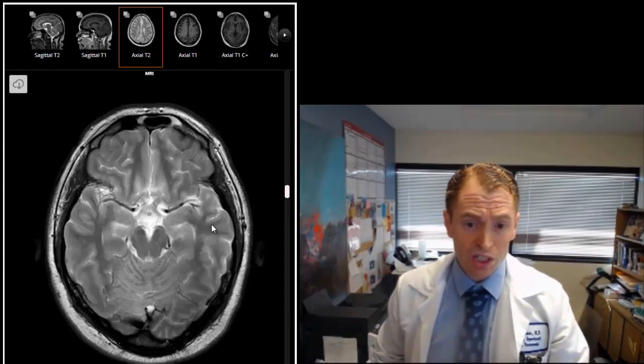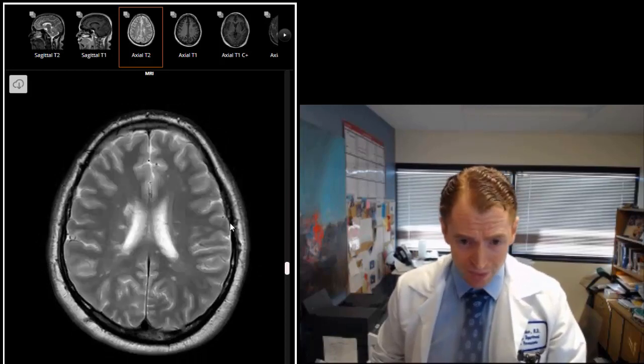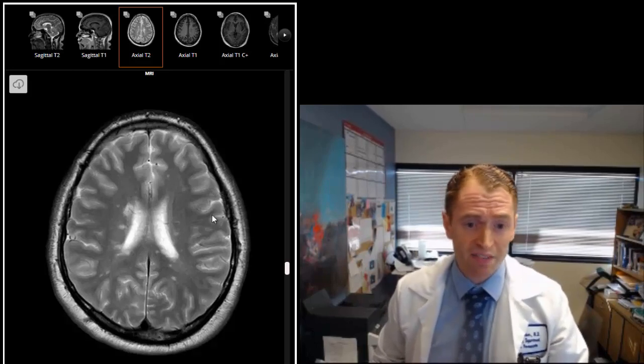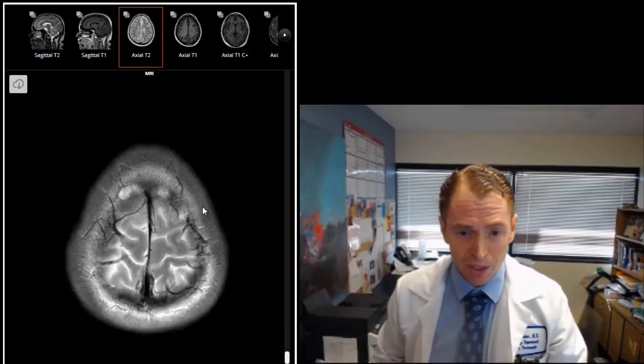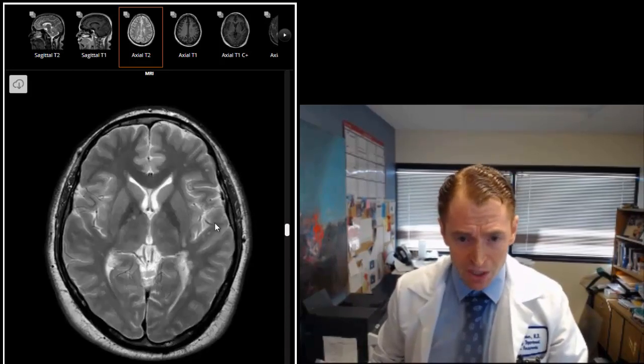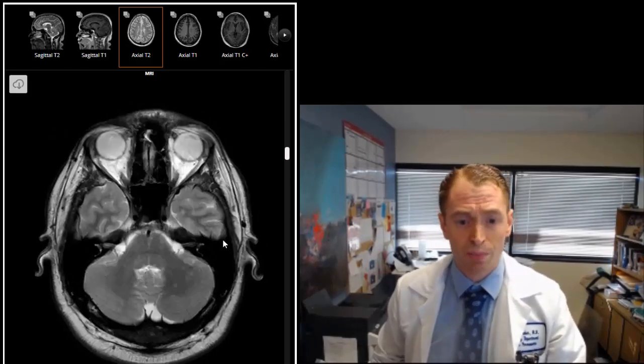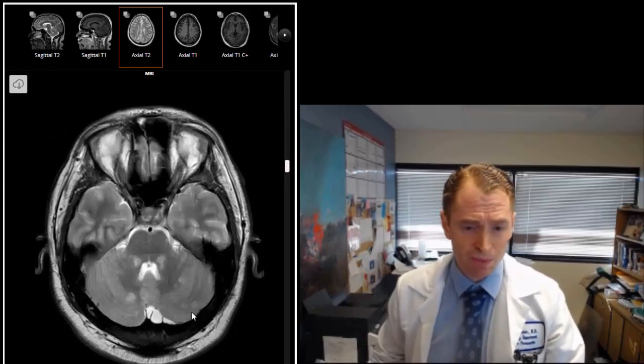Now I don't know the symptoms but believe it or not, with this MRI this man could easily be a marathon runner and a CEO with five kids and have virtually no symptoms. Now probably he has some symptoms based on some active lesions in the spinal cord which I'll show you a little bit, but surprisingly he may have relatively few symptoms.